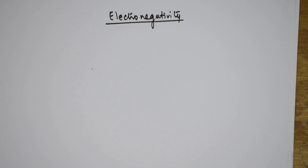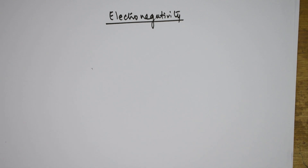In this concept I will be teaching you about the definition, the Pauling scale, the concept of Allred and Rochow's method and how to find the electronegativity value. Millikan's method I will also discuss. After that I will be discussing about the factors affecting electronegativity, then how electronegativity varies in a group and a period, and finally we will end with applications of electronegativity.